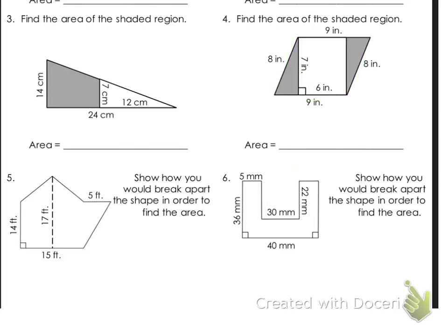Or, if you notice, there are two triangles there. We could also just find the area of the two triangles, and they actually are the same triangle. So we could find the area of one and multiply it by two. So you have a couple of different options.